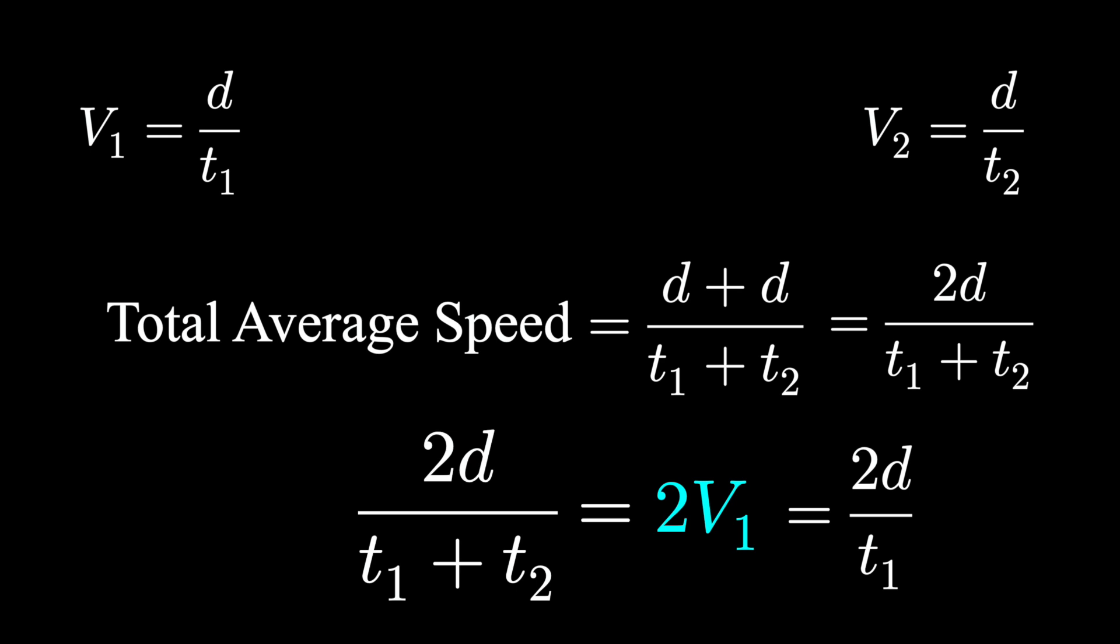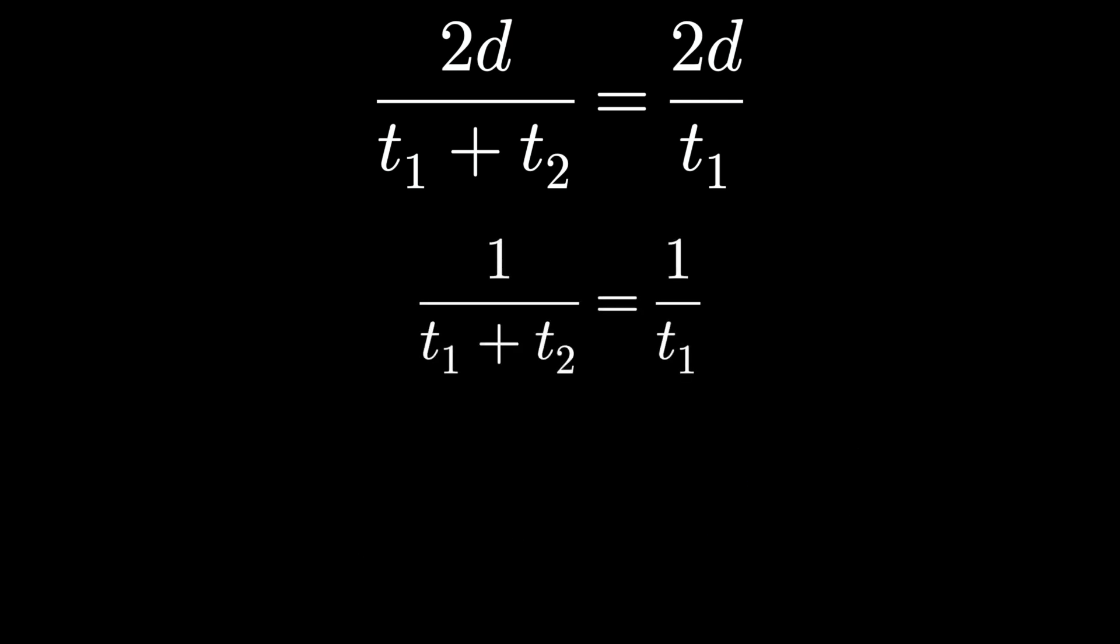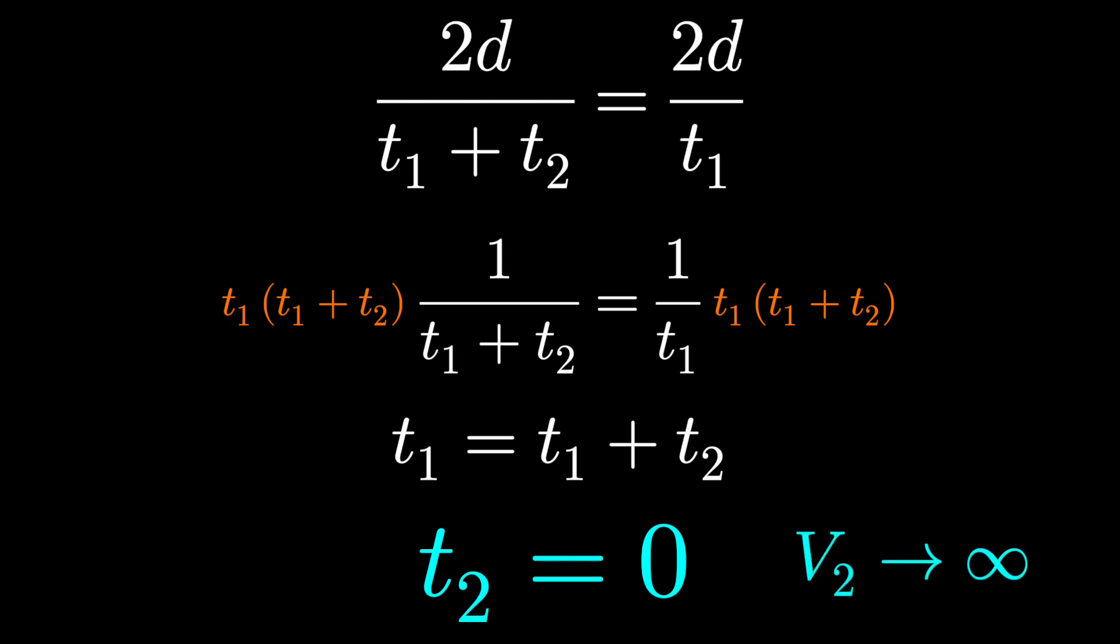And now we have an interesting thing happening algebraically. We can cancel 2D on both sides, meaning that the distance around the track doesn't matter. That's nice. And we can try solving for T2. If we try to shuffle things around to solve for this relationship, we're going to see that T1 cancelling on both sides as well, and get that T2 is 0. Or in other words, to satisfy the constraint of this question, we would need to complete the second lap in 0 seconds. We need to run infinitely fast to answer this question.